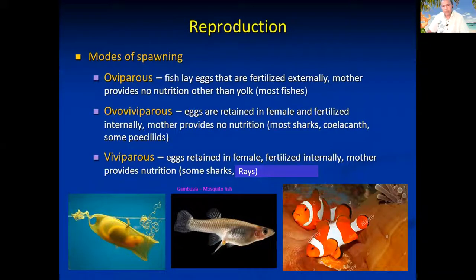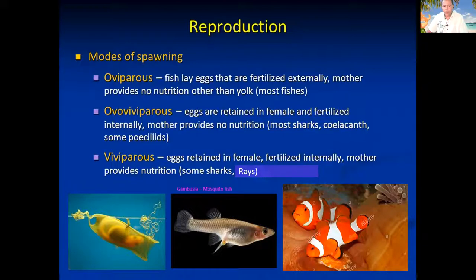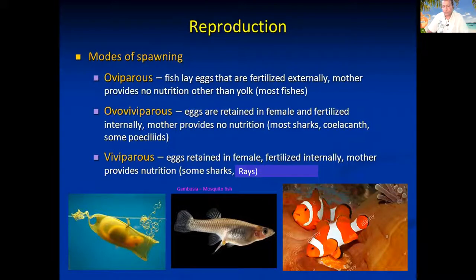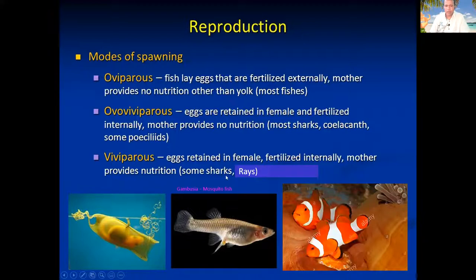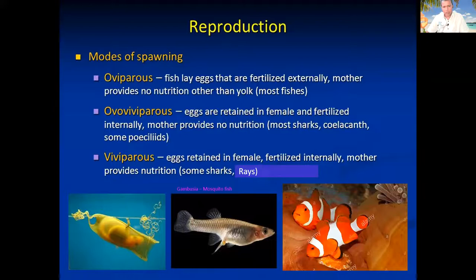The second spawning behavior is ovoviviparous. In this case, the female produces eggs and keeps them internally in her body, fertilizing them internally as well. The difference is that the mother doesn't provide nutrition directly — the yolk provides all the nutrients. The third type is viviparous, which also involves internal fertilization, but the mother provides nutrition directly for her babies. These are the main different forms of spawning behavior.